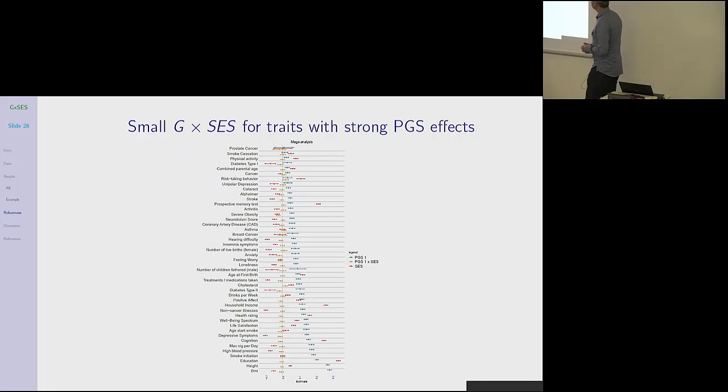So then we did some robustness checks. I want to say that this work is still preliminary, so these are kind of first robustness checks. We focus on the mega-analysis, the polygenic score with all the snips, PGS1. And we show here, now the data organized by the size of the polygenic score, the coefficient of the polygenic score. So the point to make here is that here you might expect to find nothing because your polygenic score doesn't have much power. But if you go down, you don't see that there's any systematic changes. We're still all hovering around zero, the G by SES interactions.